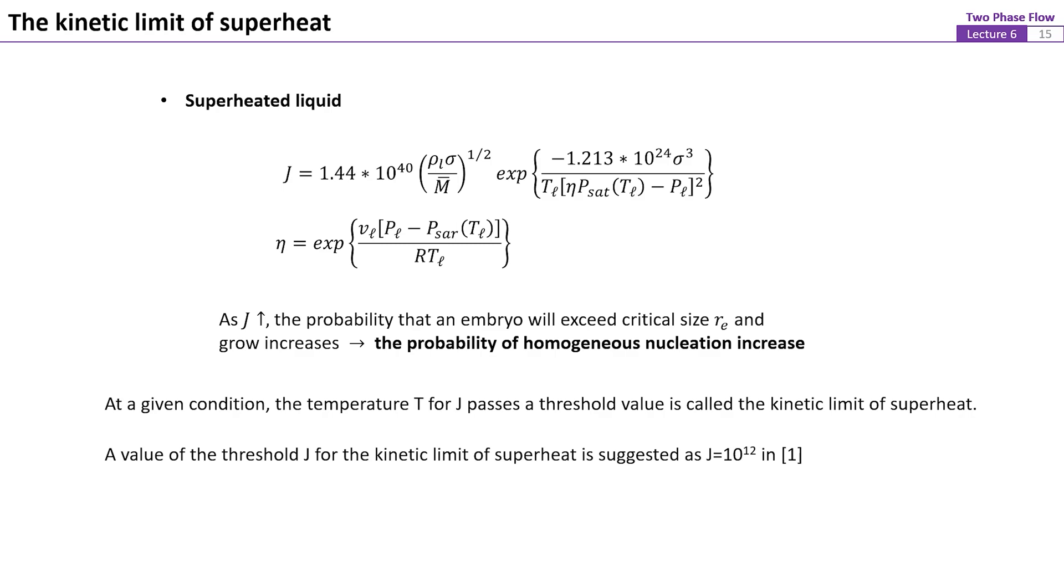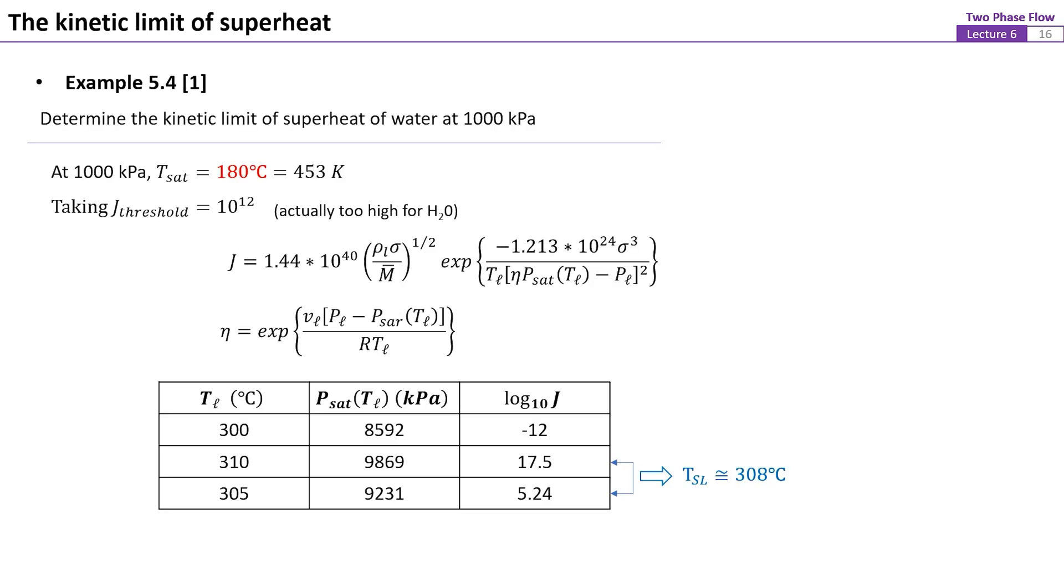A value of the threshold J for the kinetic limit of superheat is suggested to be 10 to the 12th for many organic fluids as described in the reference book. Here is an example provided in the reference book about the application of the theory we have just discussed. Note that the superheat limit temperature predicted by using this method is about 308 Celsius for water under 1 atm. This value is significantly higher than that observed from experiments. However, as will be shown later, this model works well for many types of organic fluids.